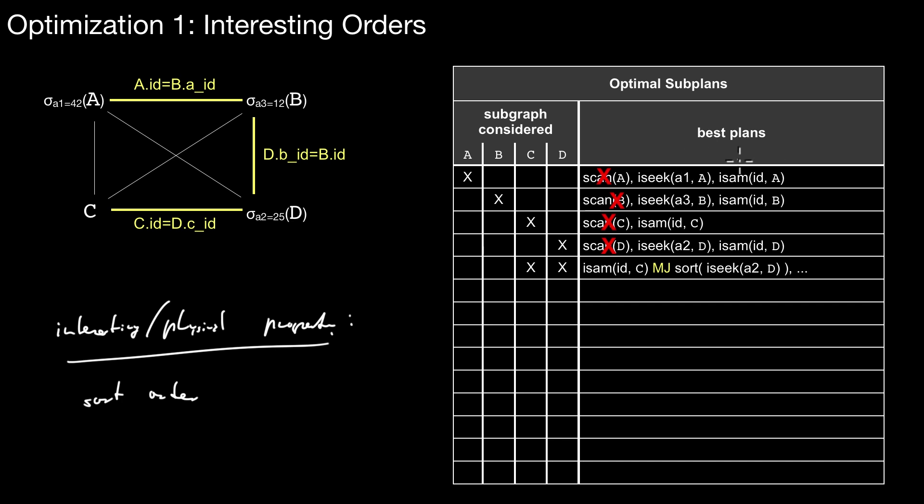Properties that may be exploited in bigger subplans. Therefore, in dynamic programming, we keep both of them.